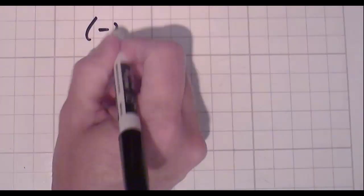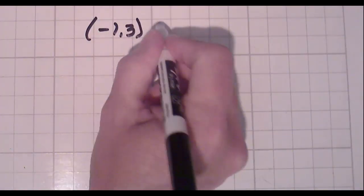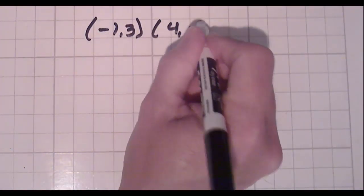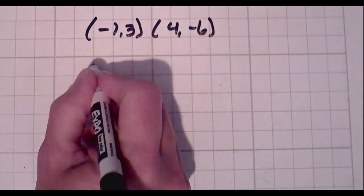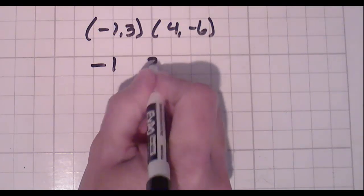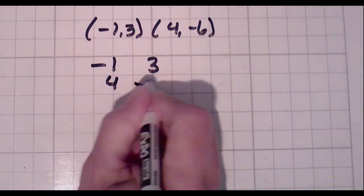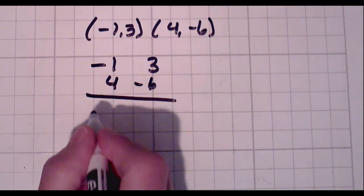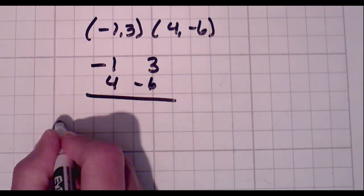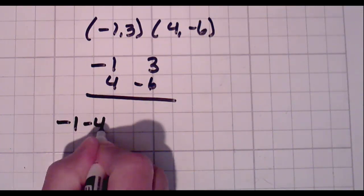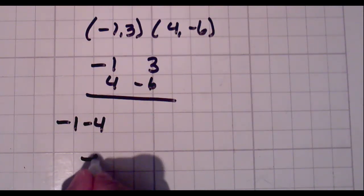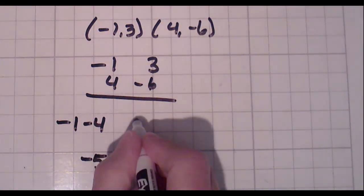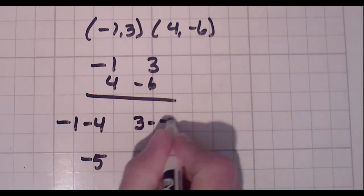So let's do the slope with some negative numbers. Let's have negative 1, 3 and 4, negative 6. You do have to be careful with negative numbers. This gets a little bit complicated. So negative 1, 3, and 4, negative 6. Because what I said was top number minus bottom number. So what is negative 1 minus 4? That's right, it's negative 5.